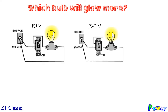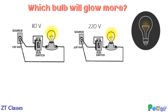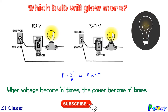The bulb that will glow more is the one whose power output is higher — jo zyada power dissipate karega wo zyada glow karega. If you compare the same bulb connected with 110 voltage supply versus 220 voltage supply, if voltage is double then power output is more, so that bulb will glow more. From here, the key takeaway is: power is proportional to voltage squared. More voltage means more power — this fact we will keep handy when solving questions ahead.